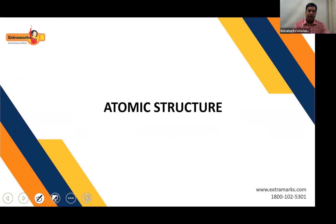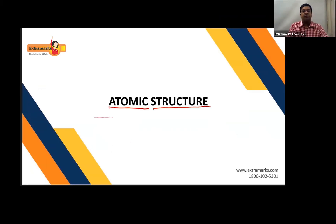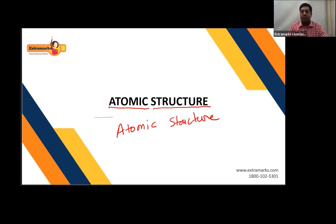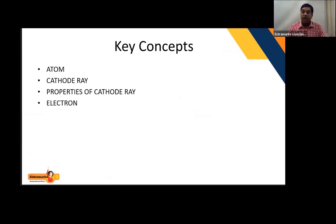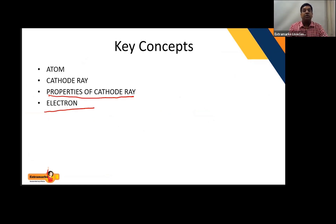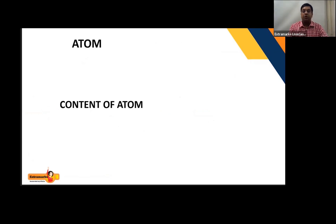Today's chapter is Atomic Structure. In this chapter, we will study about the basic structure of the atom — how atoms are formed, what are the different contents of an atom, and their discovery and various other parameters. The key concepts we will learn today are: atom, cathode rays, properties of cathode rays, and then we shall discuss the electron.